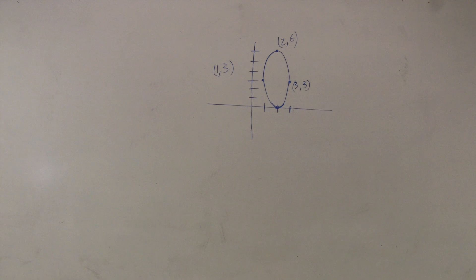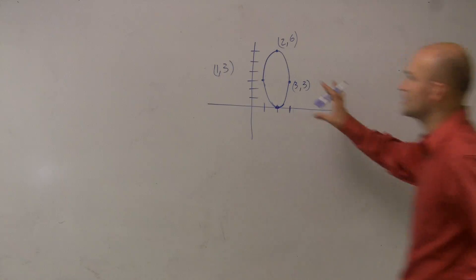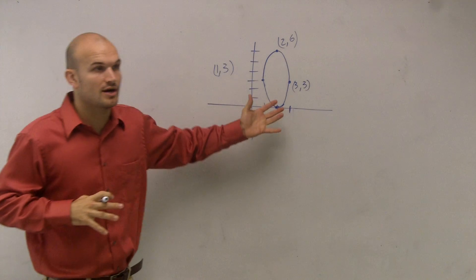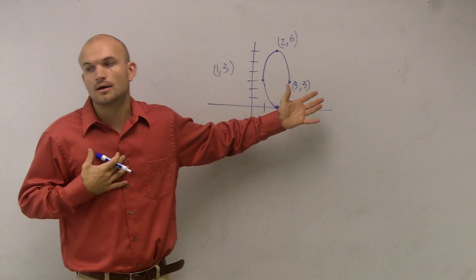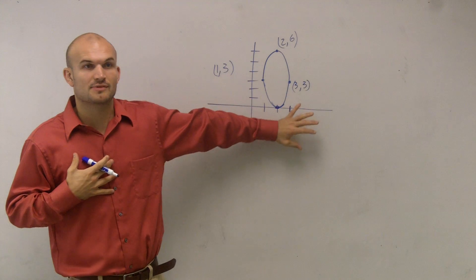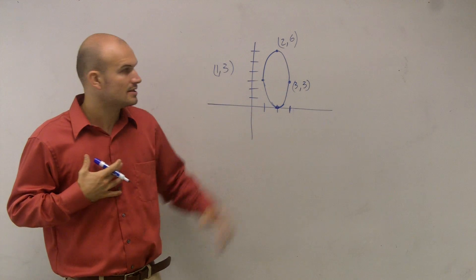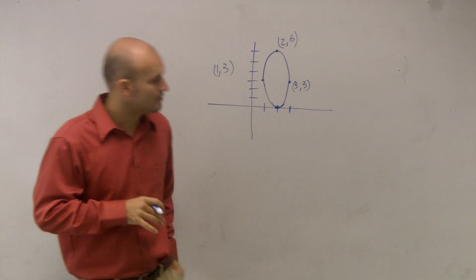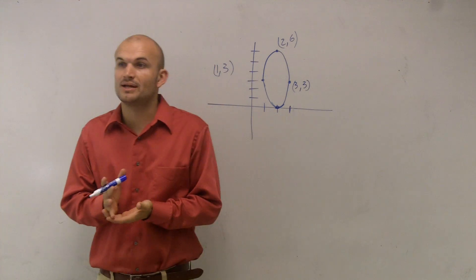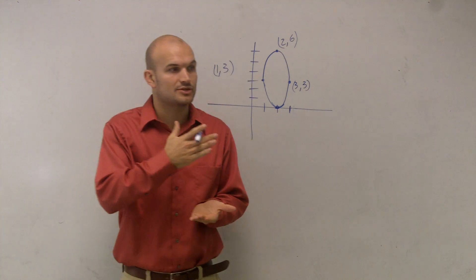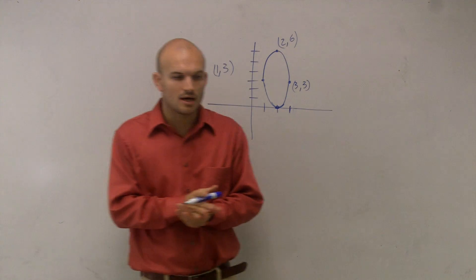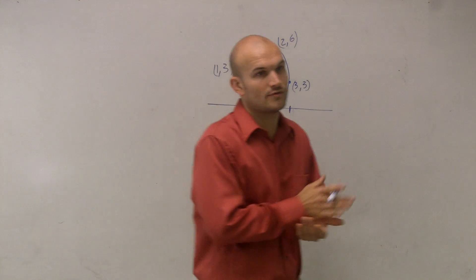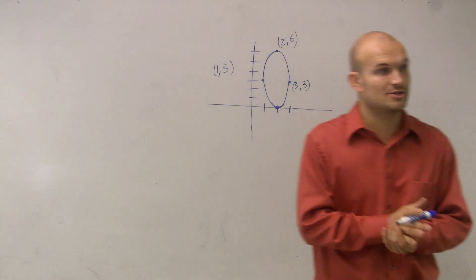To do this problem, we want to figure out the standard form of our ellipse. The standard form of an ellipse depends on whether we have a vertical major axis or a horizontal major axis.